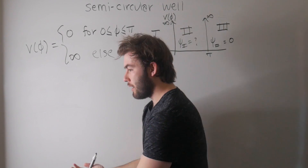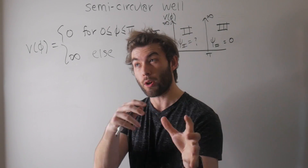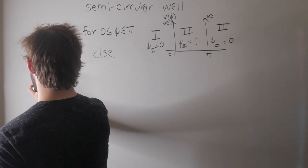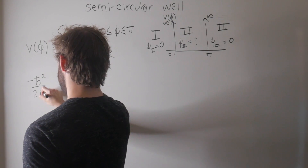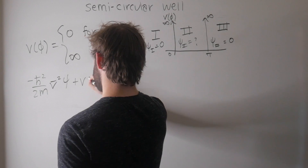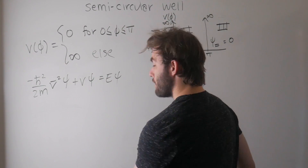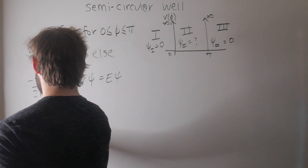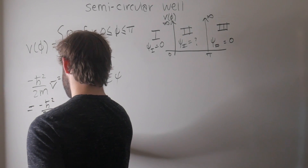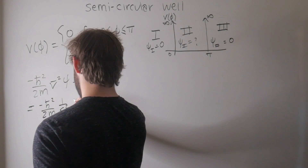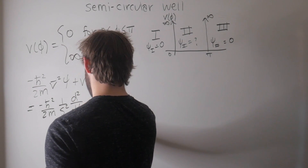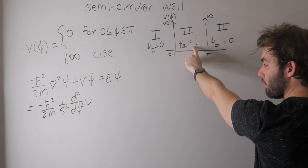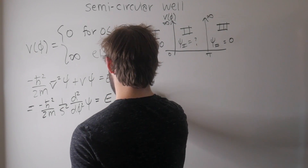Since we have something that only depends on phi, our Hamiltonian in terms of the Laplacian will be written in cylindrical coordinates. Since phi is the only variable, this simplifies our Schrödinger equation. Normally we'd have negative h-bar squared over 2m times del squared psi plus V times psi equal to E psi, but we're only working in one dimension, so we just write down the angular part of the Laplacian in cylindrical coordinates: negative h-bar squared over 2m times one over s squared times d squared over d phi squared times psi. Since the potential is zero in this region, this equals E times psi.